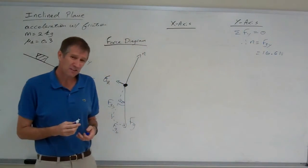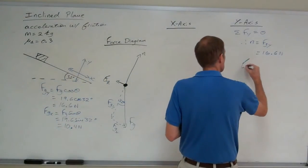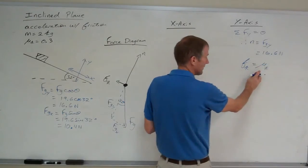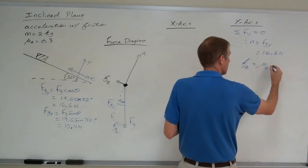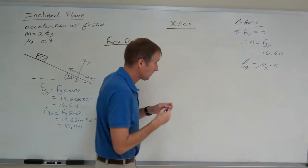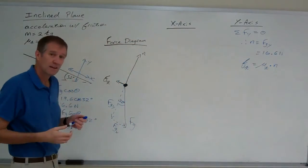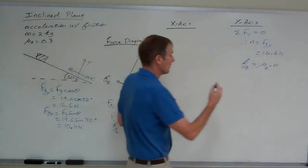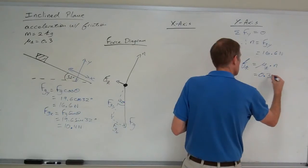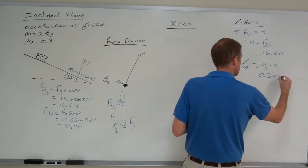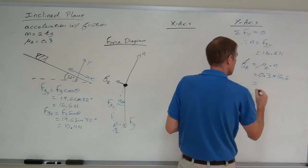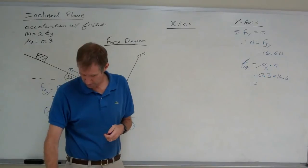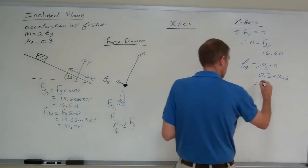Now, to calculate kinetic friction, remember that kinetic friction equals the coefficient of kinetic friction times the normal force. The coefficient of kinetic friction, an indicator of surface roughness, is equal to 0.3. So, 0.3 times 16.6 equals 5 newtons.